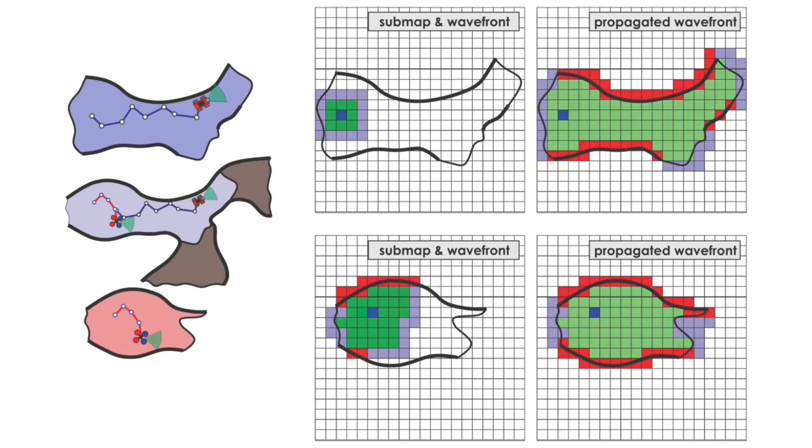The propagated wavefront for each submap is derived onboard and then sent back to the central computation hub by the respective individual robot.